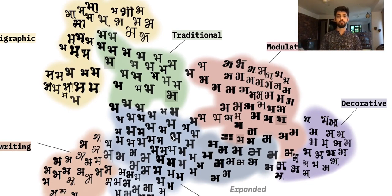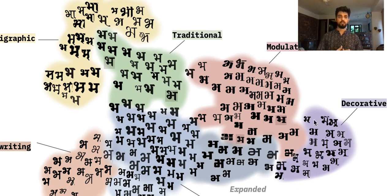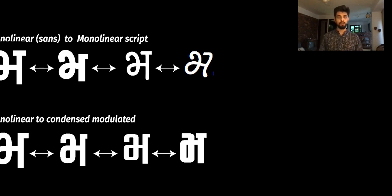Traditional typefaces also blend slowly into modulated typefaces, as both traditional and modulated typefaces are modulated. But traditional typefaces have a much longer history and a well-defined rationale in their construction, and they use a leftward-canted nib to scribe, whereas in modulated typefaces it is usually a vertically canted nib. Monolinear typefaces also slowly merge into modulated typefaces, and that's where you see transitional fonts which have elements of more than two different categories. Towards the top left corner to the bottom right corner you see a complete spectrum of different typefaces.